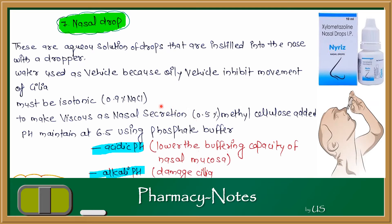Now let's talk about nasal drops. Nasal drops are aqueous solutions instilled into the nose with a dropper. Water is used as the vehicle because an oily vehicle would impede the movement of the cilia — the small hairs in the nasal passage — blocking them and preventing nasal drainage. Therefore, nasal drops must be an isotonic solution, achieved by adding 0.9% NaCl.